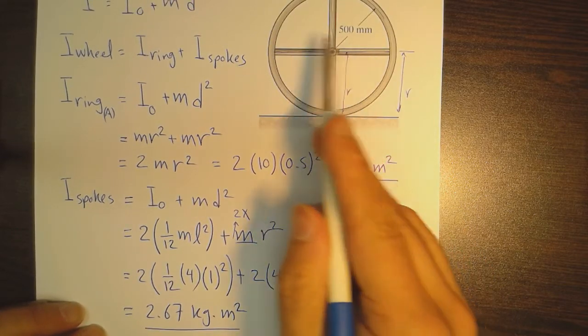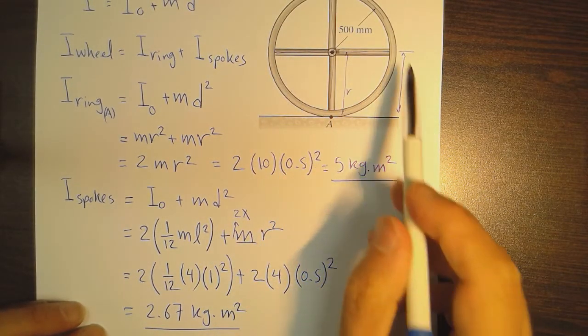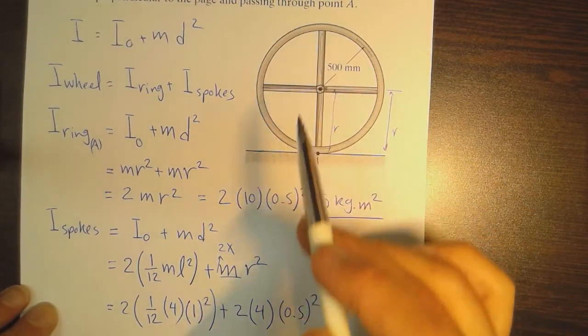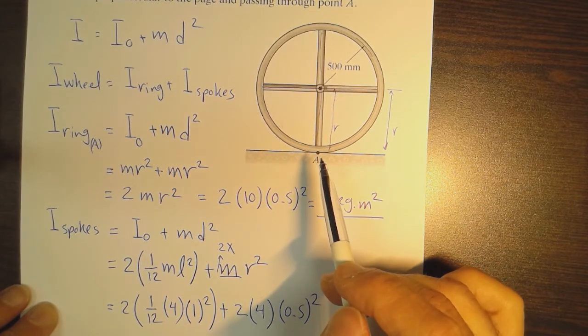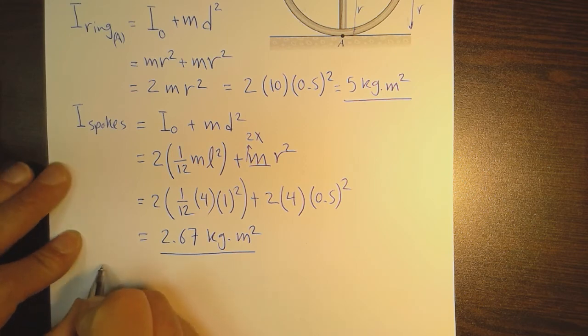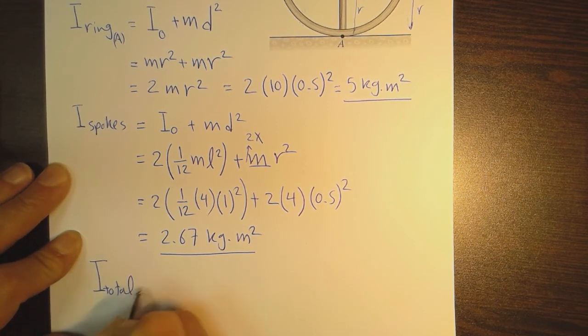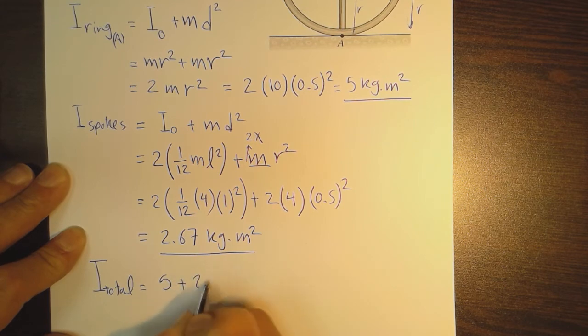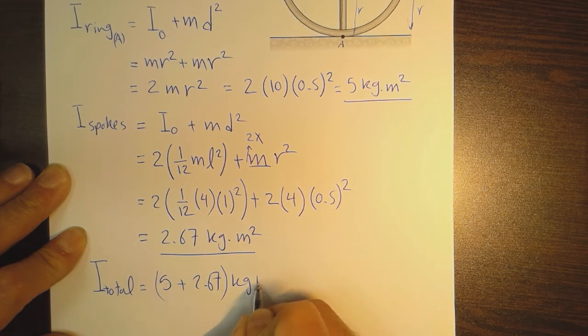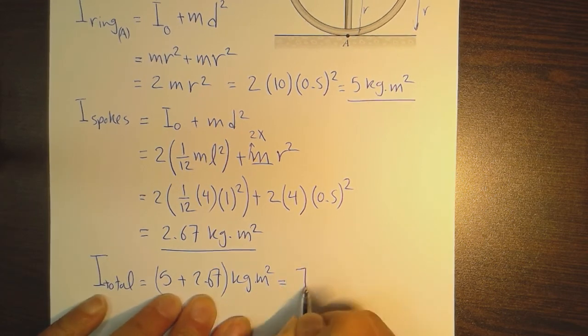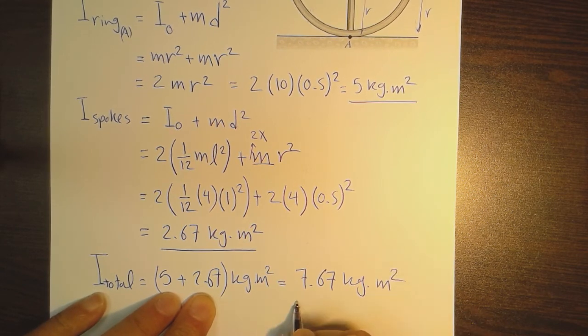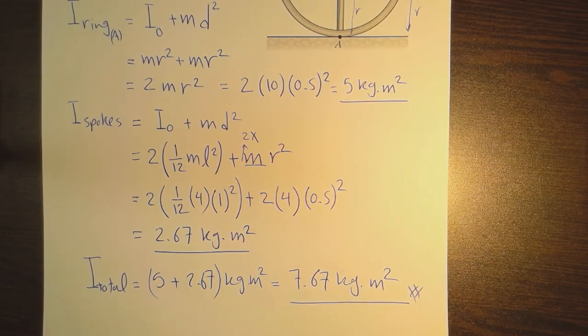For the entire wheel, the moment of inertia around an axis passing through point A is simply the summation. I_total equals 5 plus 2.67 kg·m², which gives us 7.67 kg·m². That's it. Thank you for watching.